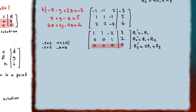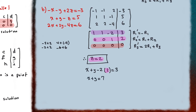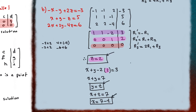Because the last row is all zeros, we know the intersection is a line. Using the second row, z equals two. Using the first row, x plus y minus two times z — which is two — equals three, simplifying to x plus y equals seven. We let y equal t, giving x plus t equals seven, so x equals seven minus t. This is the parametric equation of the line formed by the intersection of the three planes.